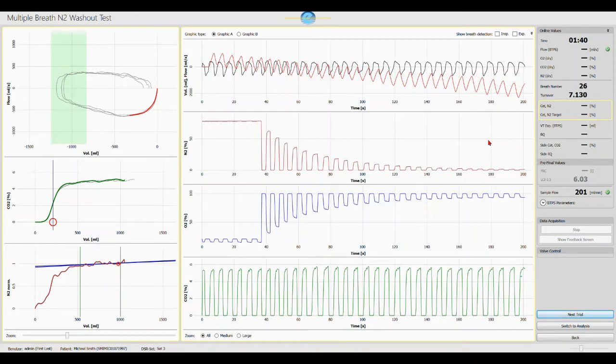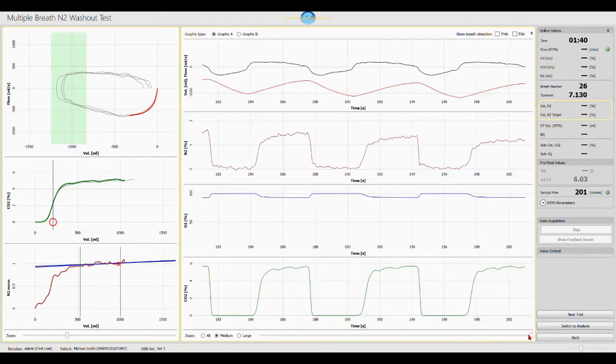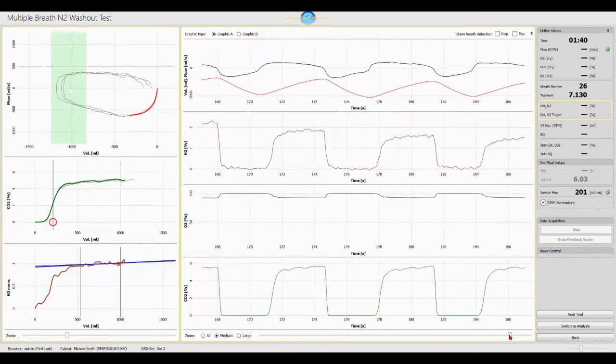During the washout, several quality parameters are monitored by the software and significant irregularities will be signaled by a warning message. After the trial, the operator can scroll through the washout again to check flow, volume and gas concentrations in detail.